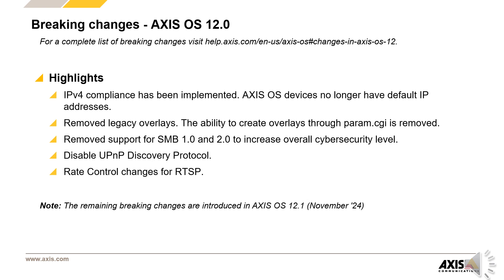We discussed breaking changes in previous videos — here are a few I would like to remind you of. Please note this isn't the complete list. IPv4 compliance has been implemented: AxisOS devices will use IP addresses either from the DHCP server or a statically configured address. The well-known default address 192.168.0.90 is gone.